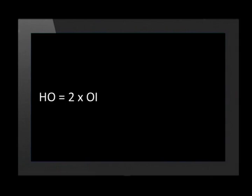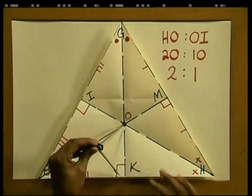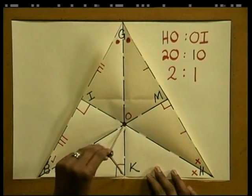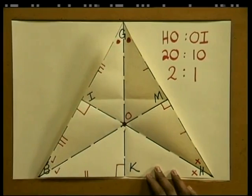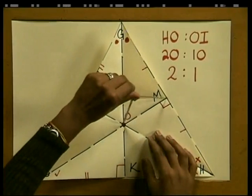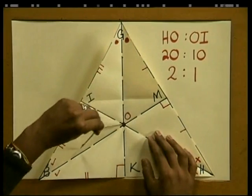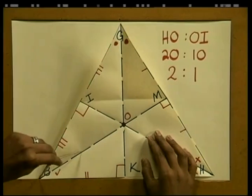We can write this ratio in a formula: HO equals two times OI — meaning two lengths of OI is the same as one length of HO. Now let's use a pair of dividers to see whether this relationship exists for the other two lines of symmetry. Placing our divider points onto the shorter segment KO, we see that GO is twice the length of KO. Similarly, placing our divider points onto OM, we see that OM is half of BO.